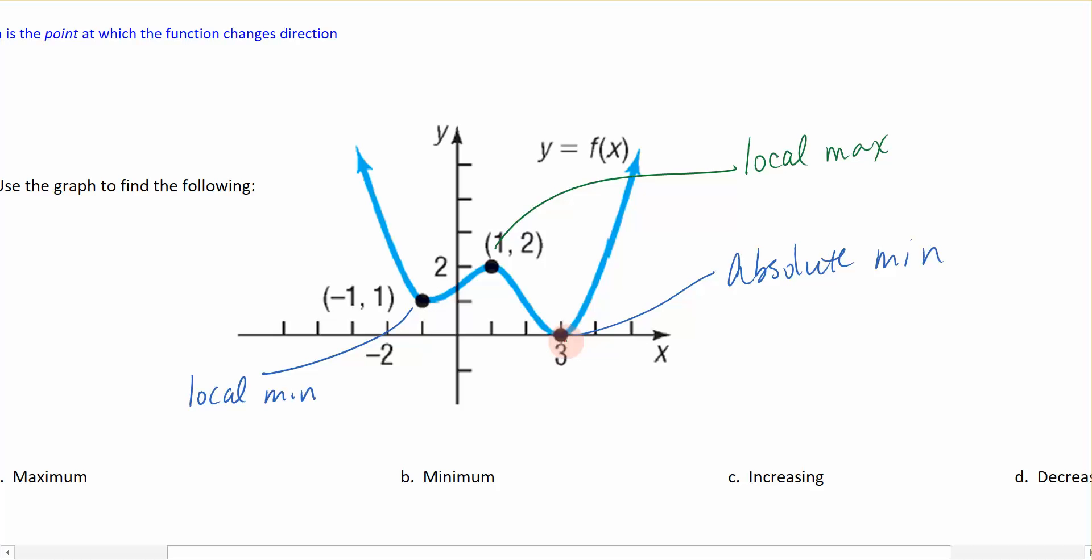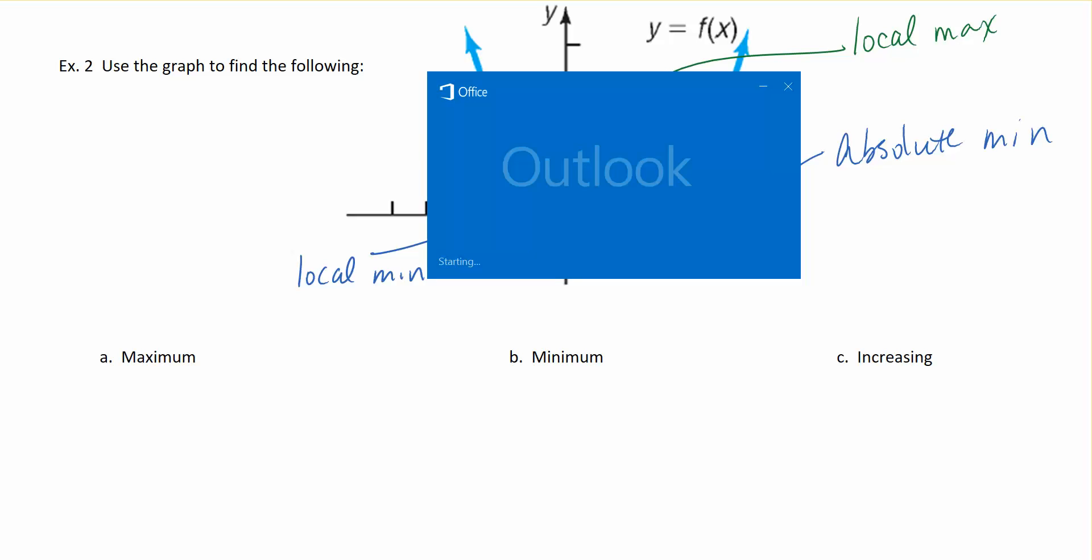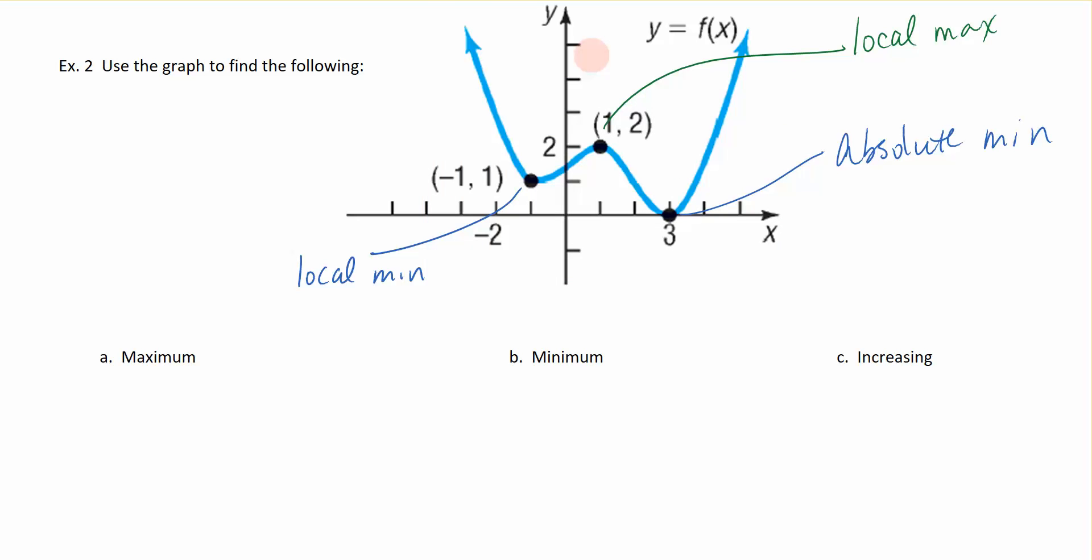So we want to just be able to write down using this function, I want to be able to determine what the maximum value is and we write it as the ordered pair. This is the point at which my function has a max and we just write that as the point 1, 2. Now over here I have 2 minimums and the first one being negative 1, 1. The second one being 3, 0, so that's the ordered pair for that one.